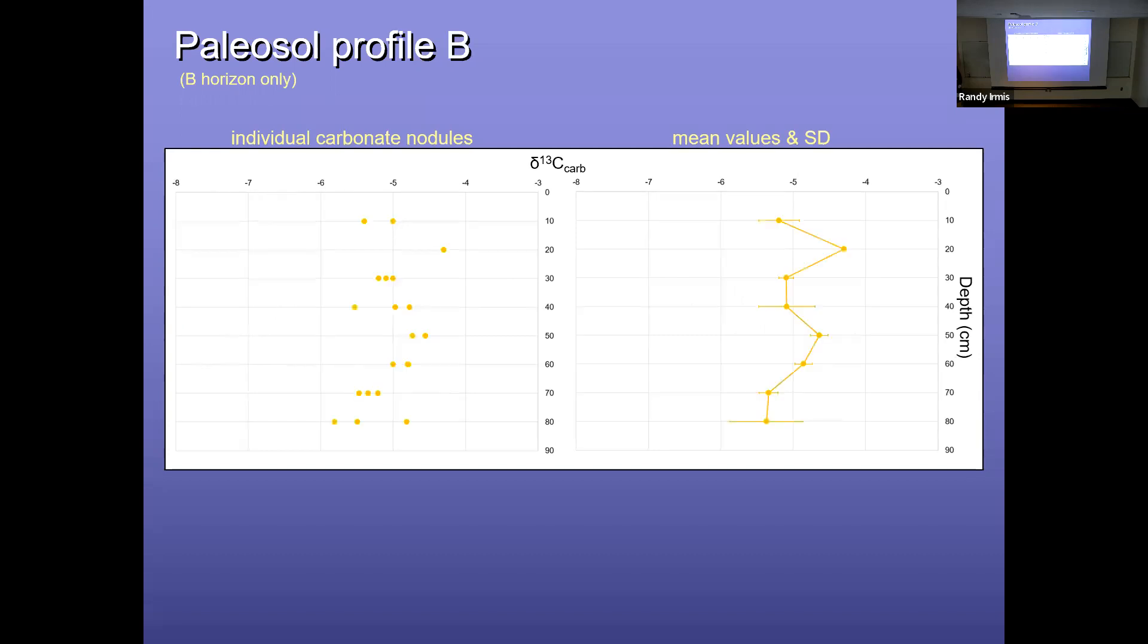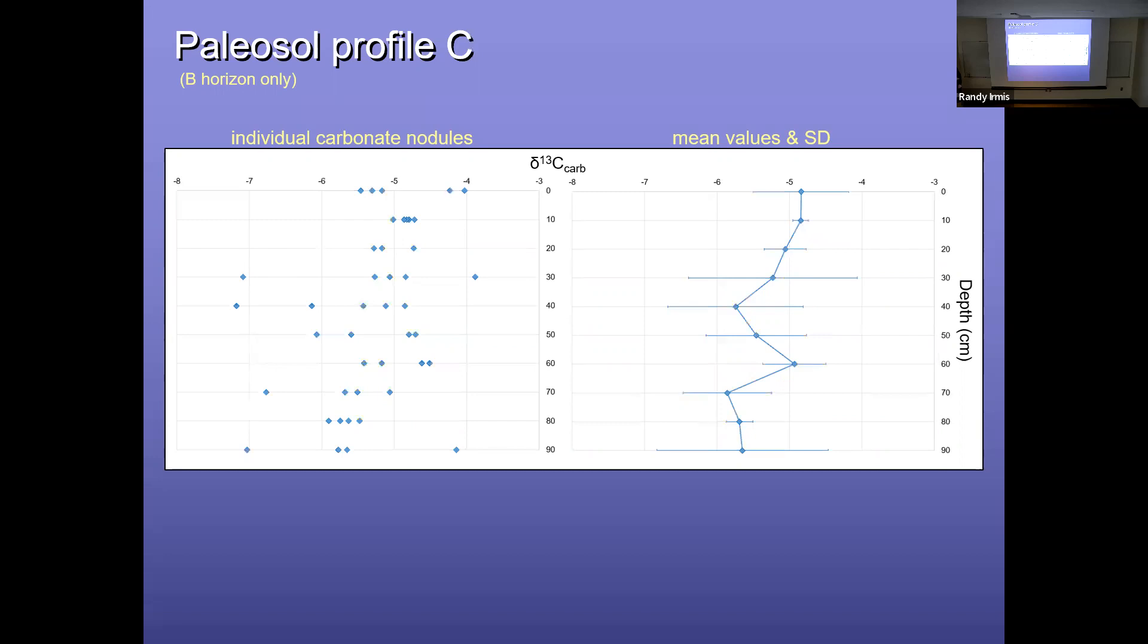And this one is perhaps the closest, if you're looking at just the means closest to what is predicted in that you get slightly heavier values here and then something close to a vertical equilibrium here, but still there's quite a bit of variation here. And we've done thin sections of the nodules to ensure that we're sampling a micrite as opposed to sort of recrystallized spar and things like that. So we tried to rule that out as much as possible. There could be other things that are playing into this variation, particularly some of these outliers here.